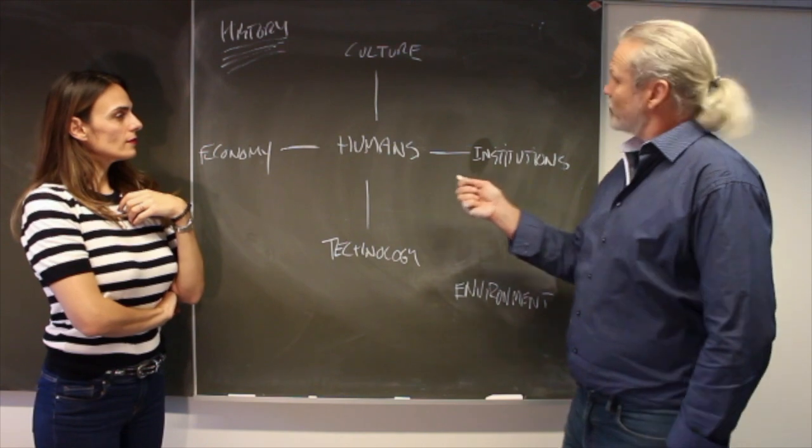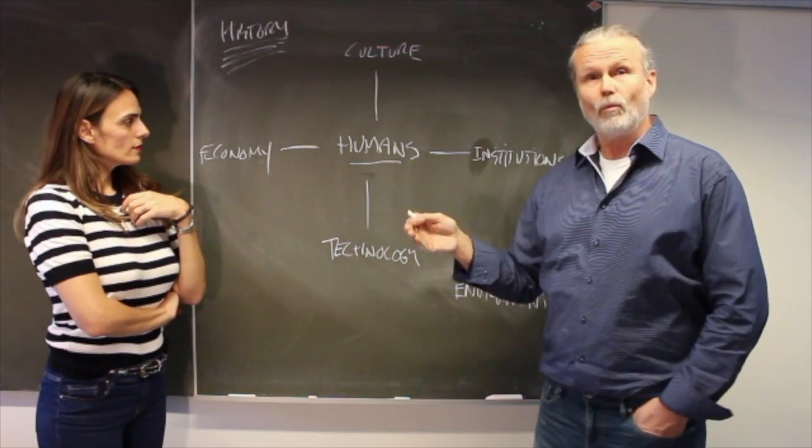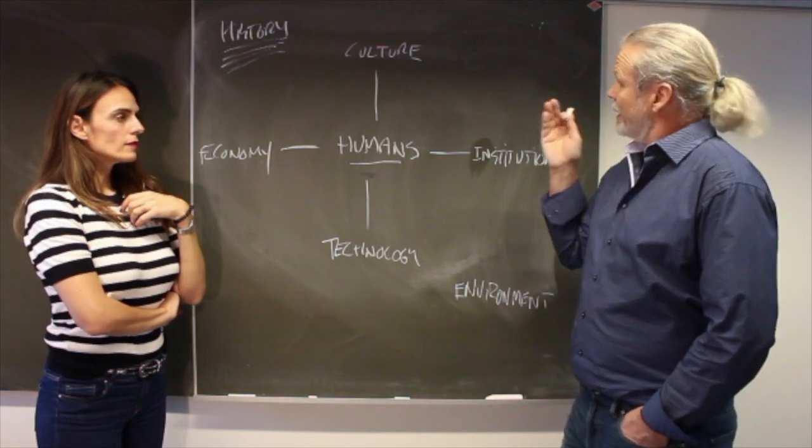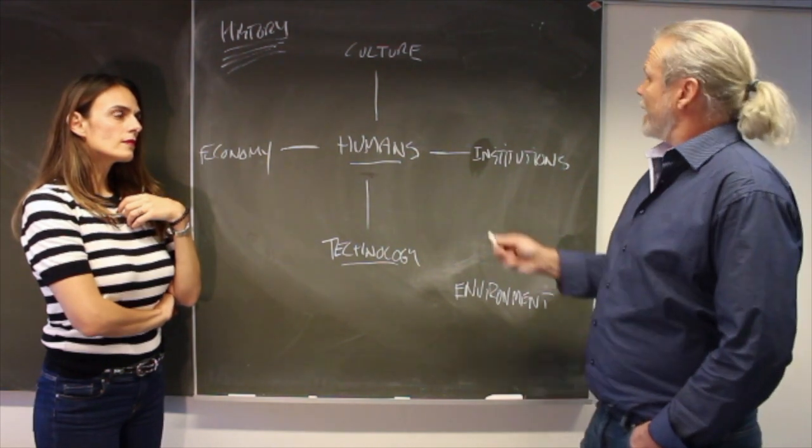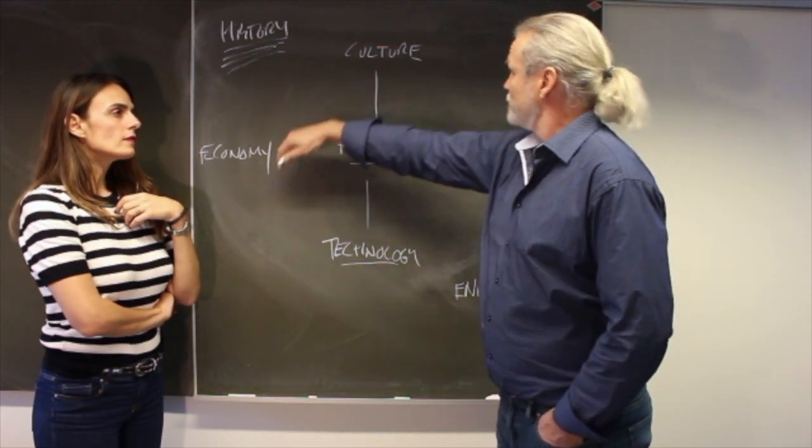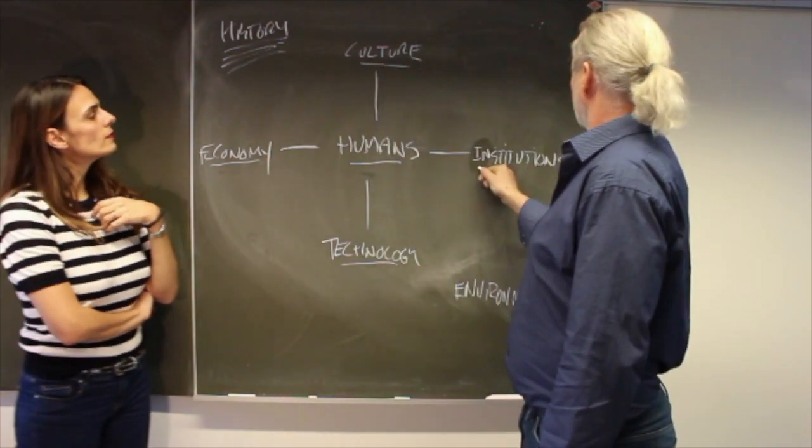I have made a diagram where we have humans in the middle. So the big issue is, of course, what does it mean to be human? And this is in part determined by our physical technologies and all of our social technologies, which are up here, which is in part our economy, our culture, and our institutions.